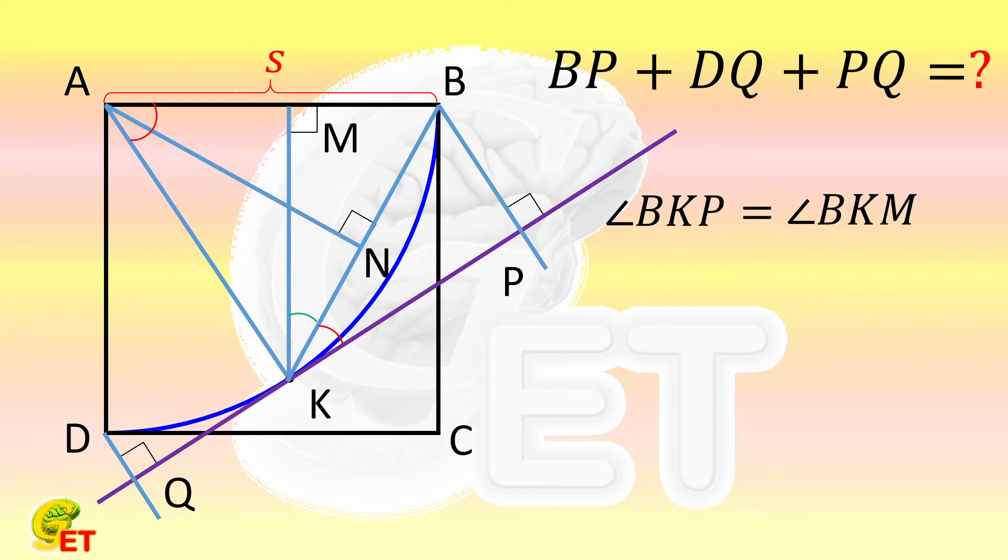That is, the three angles of the right triangle BKP are equal to the three angles of the right triangle BKM, respectively. And they share a common hypotenuse BK, so these two right triangles are congruent.